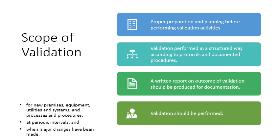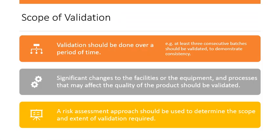Validation has a very vast scope, but before carrying out validation, proper preparation and planning must be performed. Validation is performed in a structured way according to protocols and documented procedures, and a written report on the outcome of validation should be produced. Validation is usually performed for new premises, equipment, utilities, systems, and processes at periodic intervals and when major changes have been made. At least three consecutive batches should be validated to demonstrate consistency. Significant changes to facilities, equipment, or processes that may affect product quality should be validated, and a risk assessment approach should be used to determine the scope and extent of validation required.